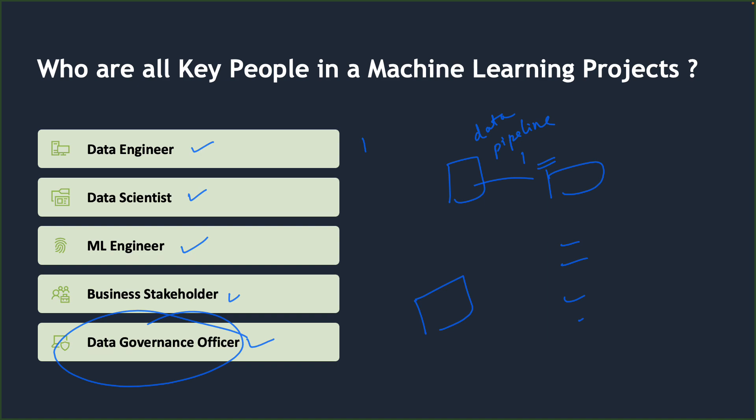As you can see, a machine learning project involves many people from various backgrounds with varied skill sets and responsibilities, all working together on a single project. The process followed in a machine learning project is also very different from what we follow in a standard software development life cycle.